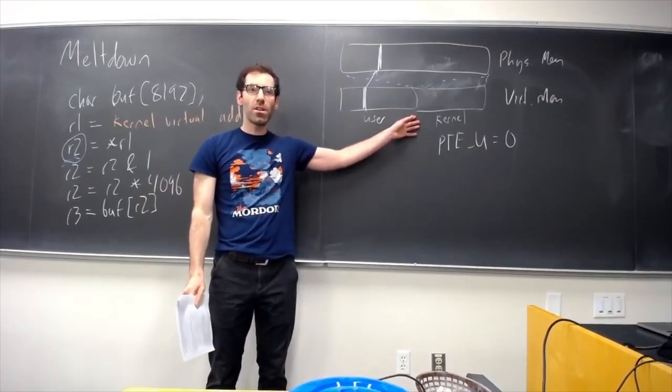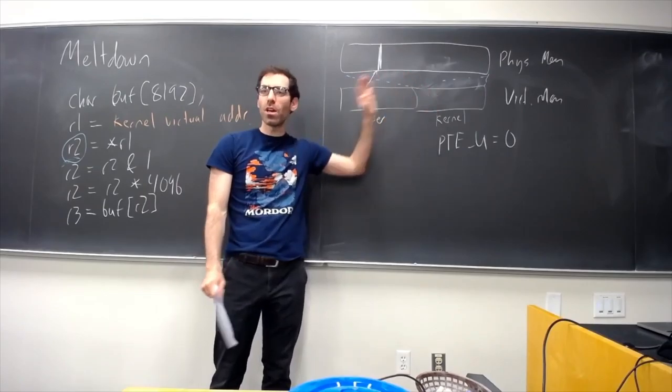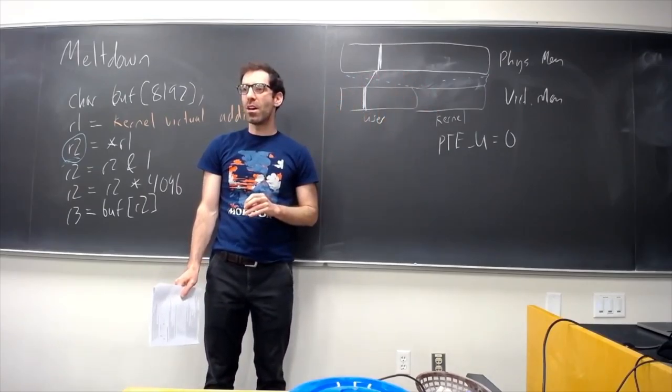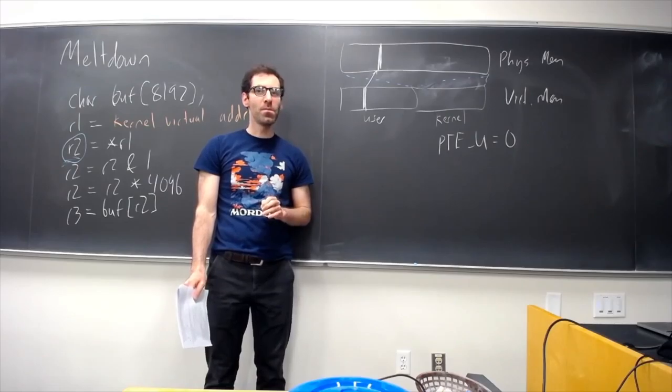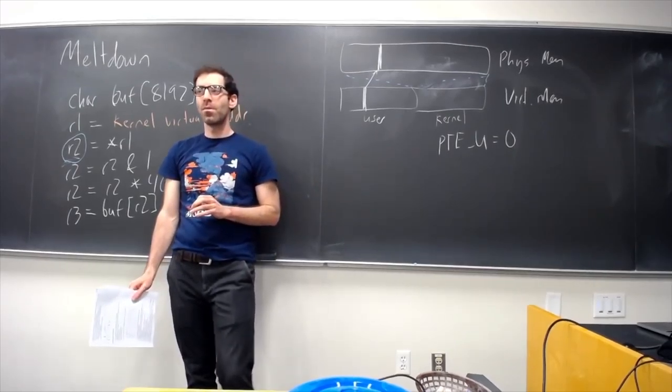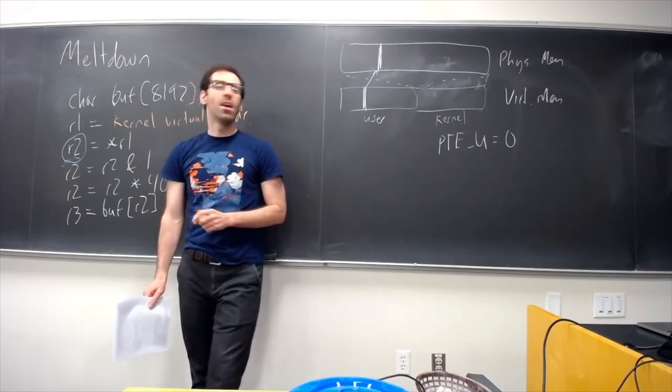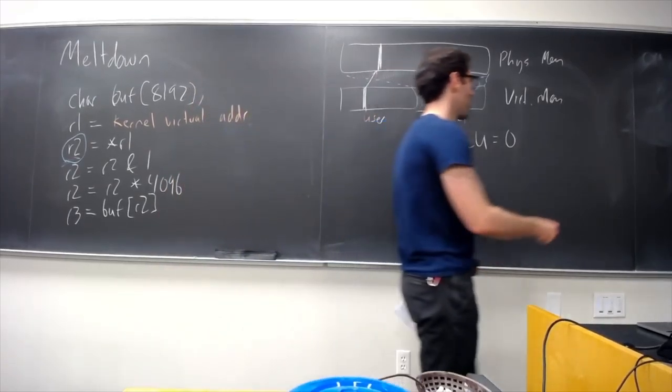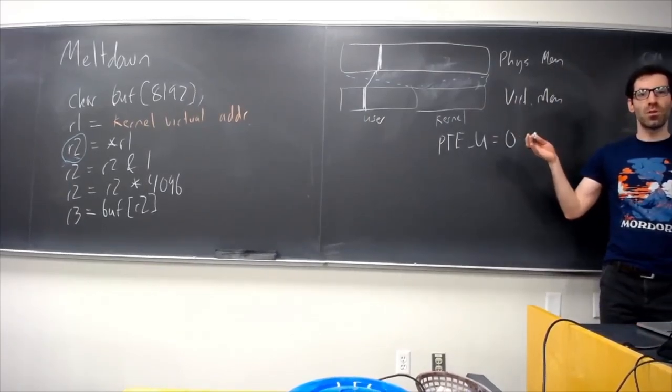So this is something that a bunch of operating systems were doing or something like this. Would anyone have an idea of why operating systems were doing this? Why are we putting the kernel mappings in the user page table? It was just a guess. Could it be like for a faster access? Yes. So specifically, think about what needs to happen when we do a system call.